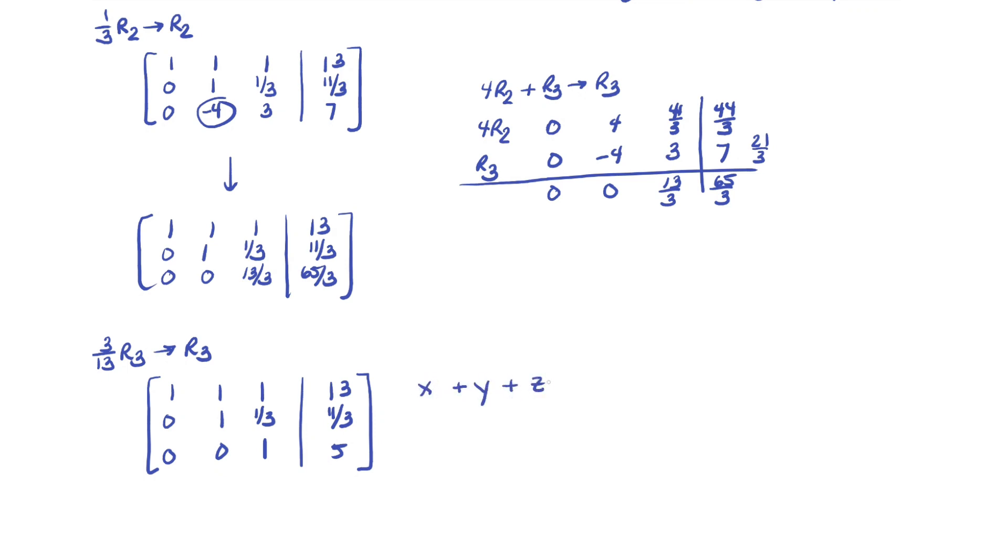So you have x plus y plus z equals 13. We have y plus one third z equals 11 thirds. And we have z equals 5. So great. We know one of the variables. So now we take z equals 5, substitute it in the equation right above it because we're going to be able to find y. And then once we find y and z, we plug into the first equation to find x. That's what makes this method so useful is that you start with knowing one variable, then you pick up another one, then you pick up another one. So y plus one third times 5 equals 11 thirds. So you have y plus 5 thirds equals 11 thirds. Well, that means y is equal to 6 thirds, which is 2. So this is good news.